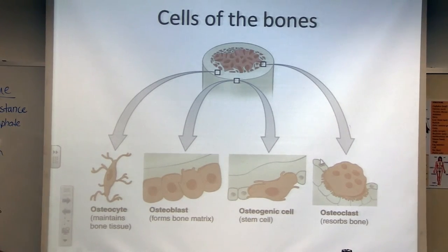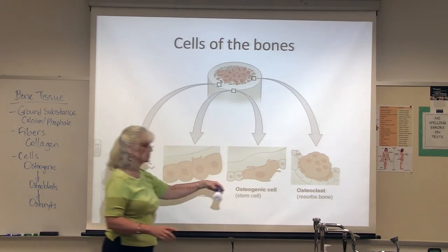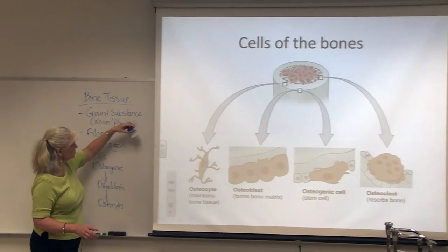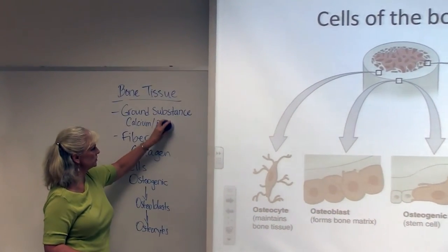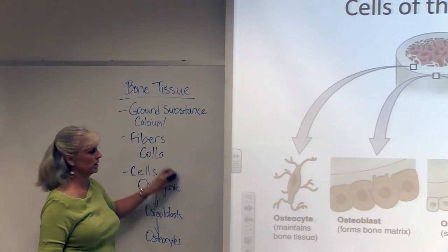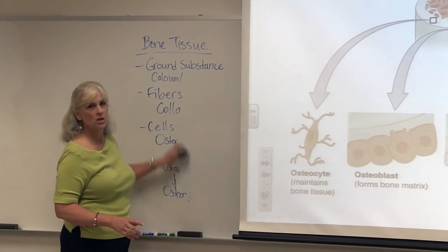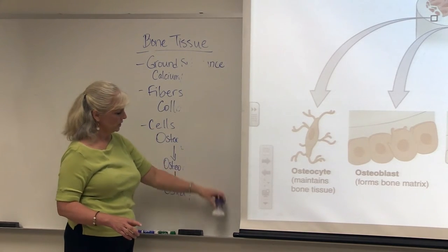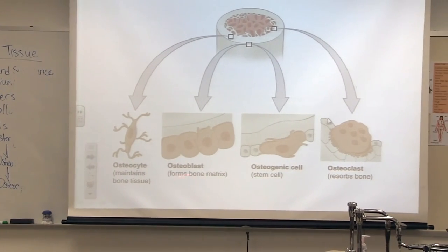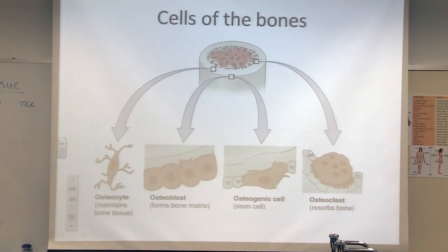The osteoclasts are a bit like a scrubber — as they resorb the bone, it's like a scrubber on a board just taking a little bit of the surface away, not scrubbing into it. It just takes a little bit of that calcium off the bone and sends it back into the bloodstream. So those are the cells of the bone tissue: osteogenic cells, osteoblasts, osteocytes, and the cutters — the osteoclasts.